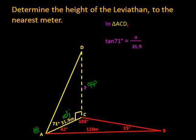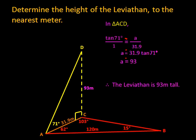So tan of 71 degrees is x, or in this case, little a, over 31.9. So over 1, cross-multiply, that means 1 times a is a, 31.9 times tan of 71, and there we go. Approximately, so all these are approximate because that 31.9 was originally approximated.